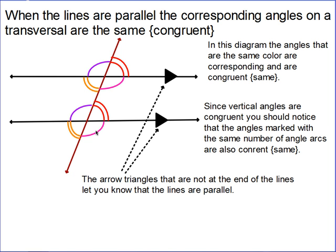These two are vertical, so they're the same, and these two are the same — they're not corresponding, but they are the same angle. If you look at a set of parallel lines, there are actually only two angles: angle A and angle B, repeated in different locations. Going around, it's angle A, angle B, angle A, angle B, and the same pattern repeats at the next parallel line.